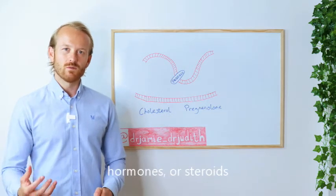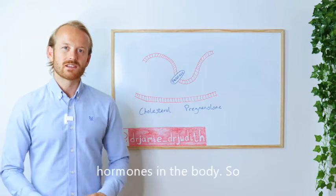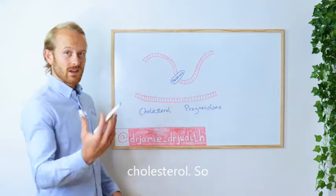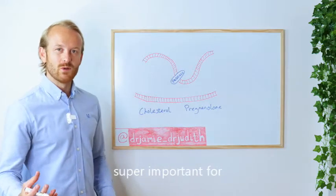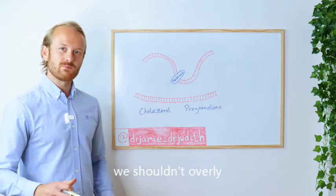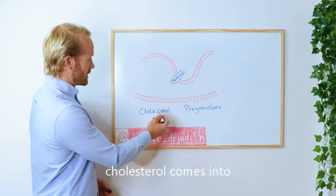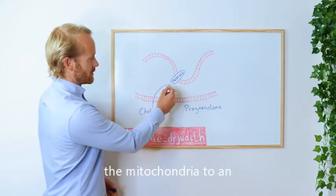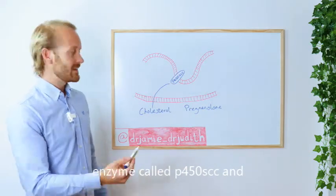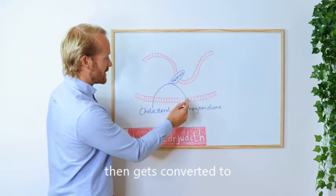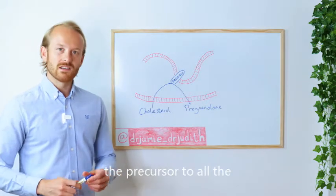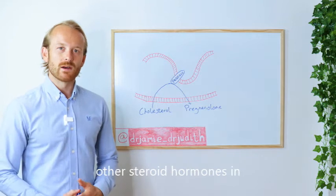So what happens is we have cholesterol. Cholesterol is super important for hormone production and we shouldn't overly suppress cholesterol. Cholesterol comes into the mitochondria to an enzyme called P450 SCC and then gets converted to pregnenolone, which is the precursor to all the other steroid hormones in the body.